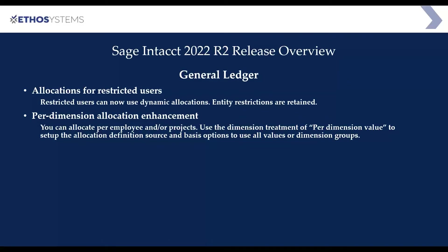Within General Ledger, you have the ability to restrict users with dynamic allocations, and restrictions per entity are now retained. If you are using dynamic allocations, you have further enhancements there. You can also allocate things per employee and per project now as part of the dimension allocations within Sage Intacct — employee and project are now available as dimension values to allocate within General Ledger.